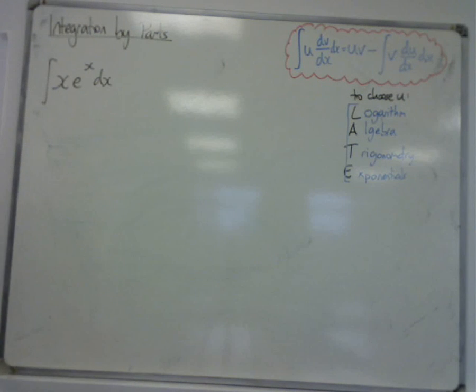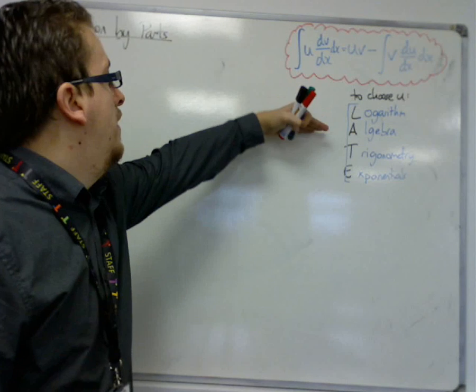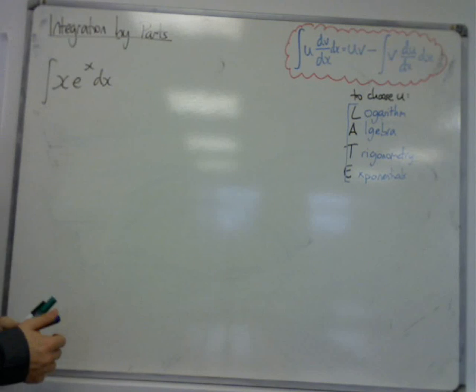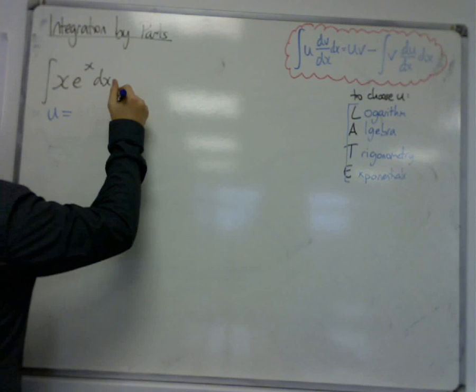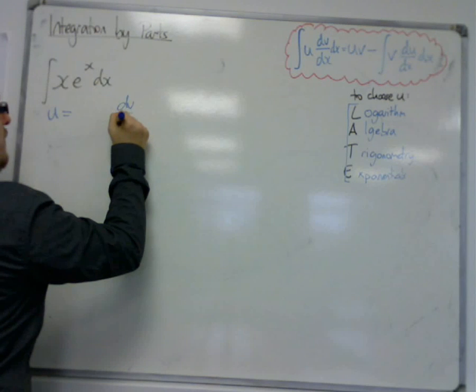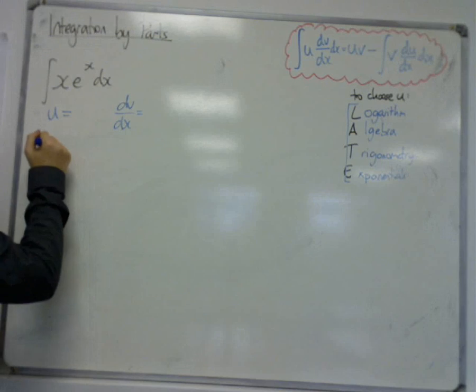Looking at this, there are no logarithms, but we do have a polynomial, we have the x. So the x is going to be the u, and I always set it out so that we have u is equal to, dv/dx is equal to, and then when we've got those...